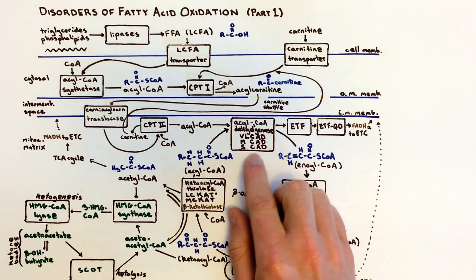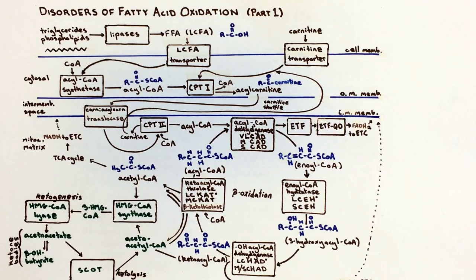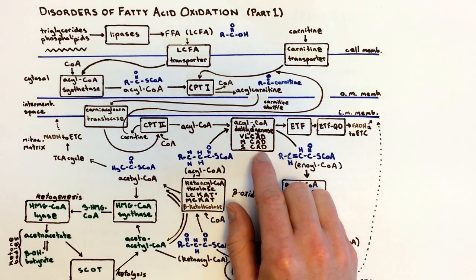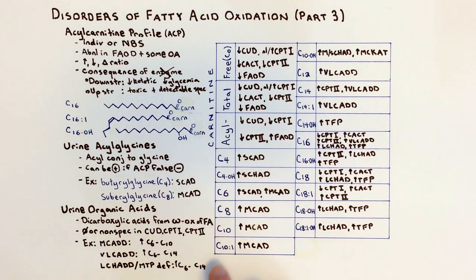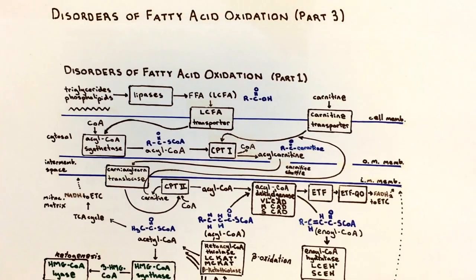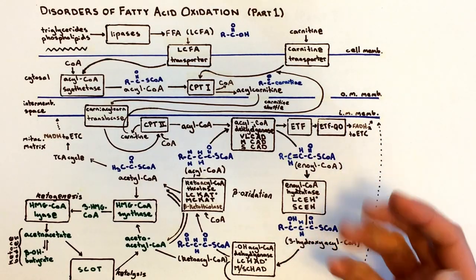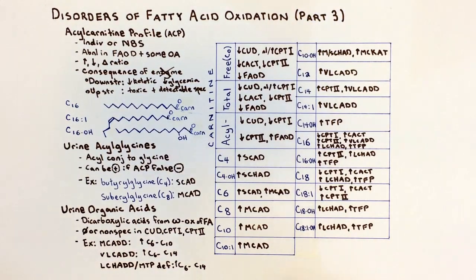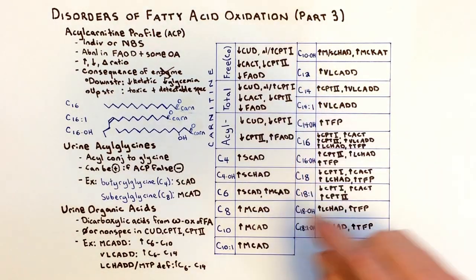Moving into the disorders of beta-oxidation proper, we start with SCAD deficiency. This is a problem metabolizing very short acyl-CoAs, so we see increased C4 and C6 acylcarnitine species. The related enzyme M/SCAD involves the 3-hydroxyacyl-CoA species just upstream, so those build up — specifically C4OH in SCAD and C10OH in M/SCAD enzyme deficiencies.